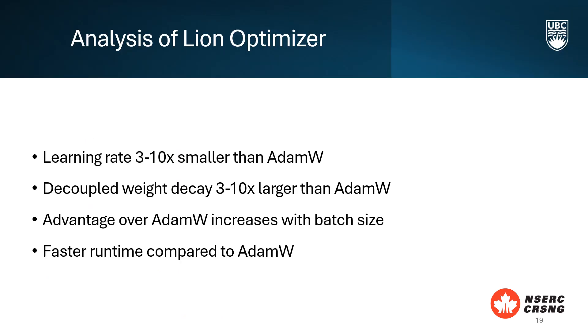Based on the paper, it is suggested that LION typically requires a learning rate 3 to 10 times smaller than that of AdamW and a decoupled weight decay that is 3 to 10 times larger compared to AdamW. Additionally, the advantage of LION over AdamW increases with larger batch sizes and LION has a faster runtime than AdamW.